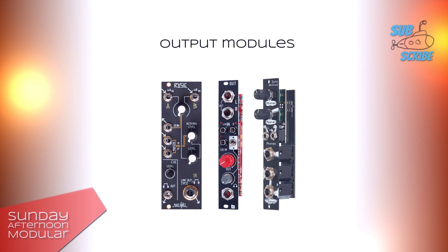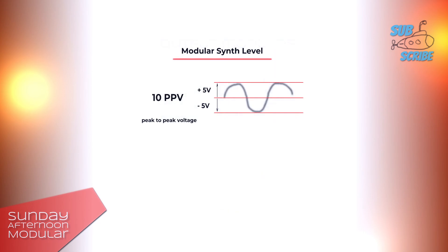We are now going to see some different voltage levels. These are just the most common, but that does not mean that the level can't be higher or lower — it also depends on the product. Within a modular synth we normally have 5V. Maybe you also stumbled over the term 10ppV, which means peak to peak voltage, that is minus 5 to plus 5V.